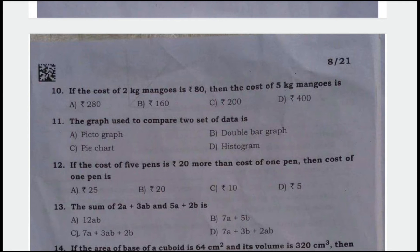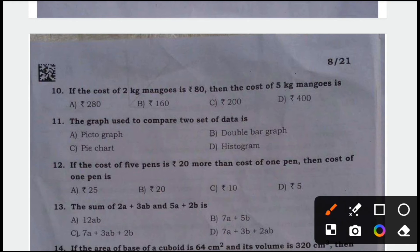If the cost of 2 kg mangoes is Rs. 80, then the cost of 5 kg mangoes is, the answer is option C, Rs. 200.